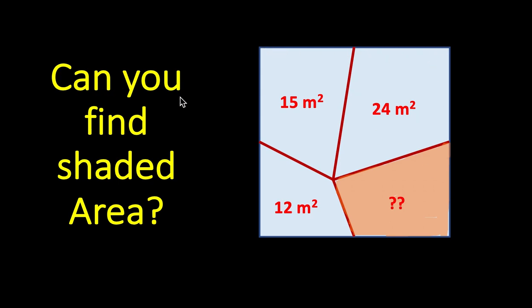This is a square and by square you know that all four sides are same equal length and also each of the angles are 90 degrees. So this is 90 degrees, this is 90 degrees, all the four angles are 90 degrees and all sides are equal in length.